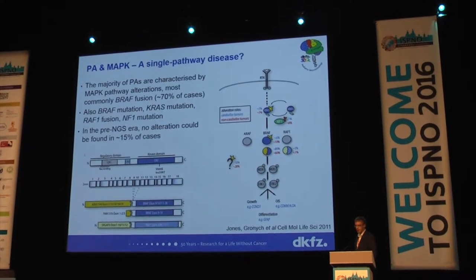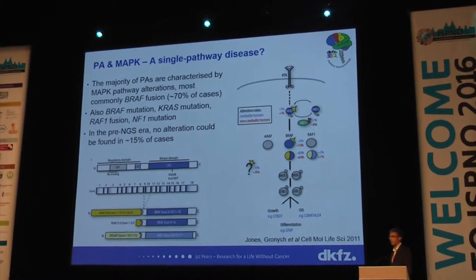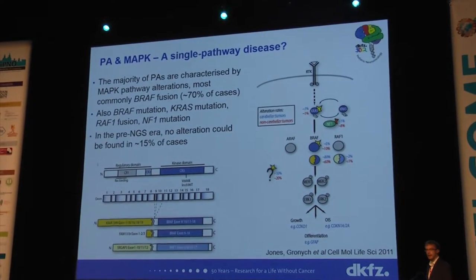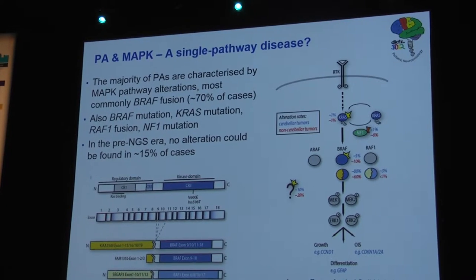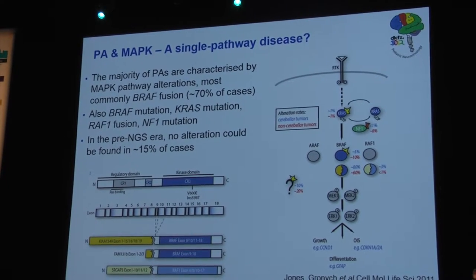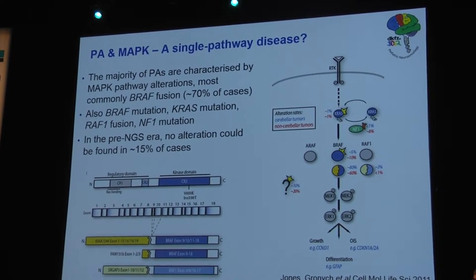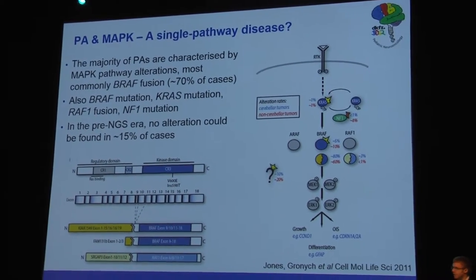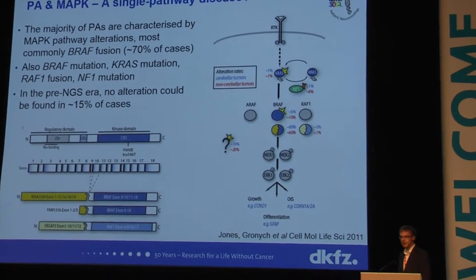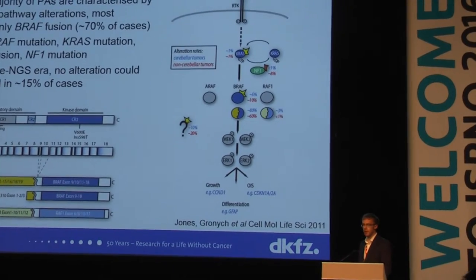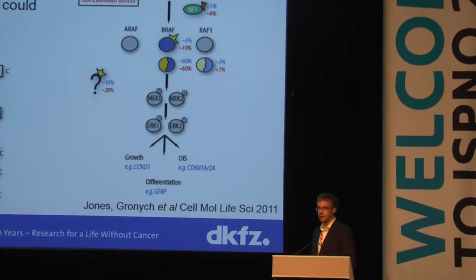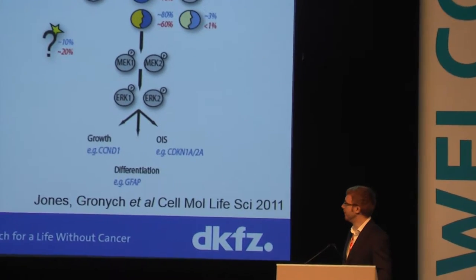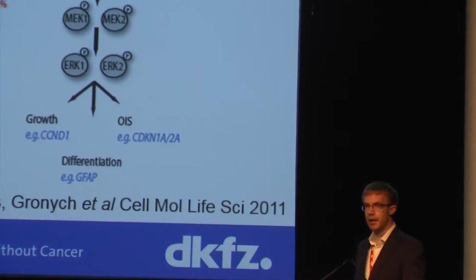What we've known for a while is that there's a very high frequency of MAP kinase signaling pathway alterations in pretty much all of these tumors, but particularly within the pilocytic astrocytomas. Prior to the NGS era, we knew that in around 70 to 80% of those cases we could find some kind of MAP kinase alteration — whether it was the classical BRAF fusion gene, BRAF mutation, or NF1 — but there was still a subpopulation of cases which were unexplained.